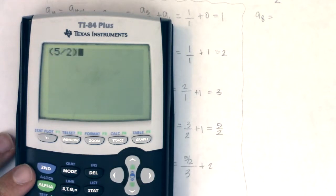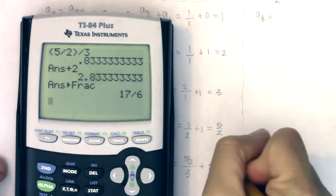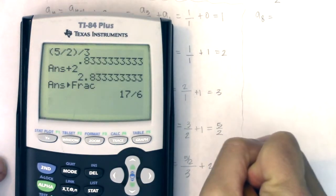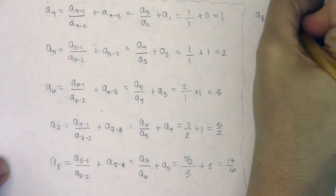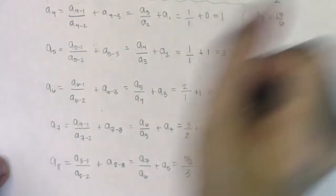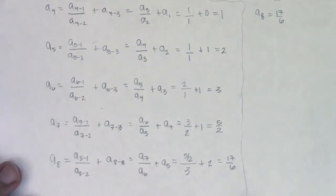So I will take five halves. I will divide it by three. I will add two to it. And I will math frac that and find out that we had seventeen sixths. So there is the eighth term in my sequence.